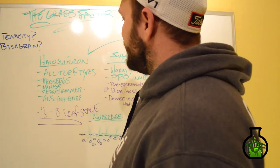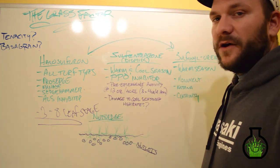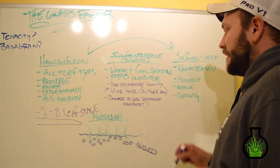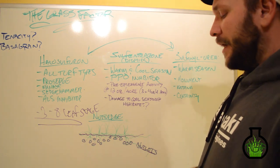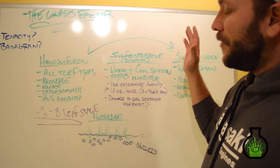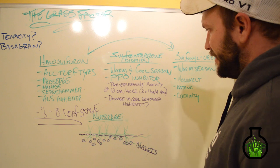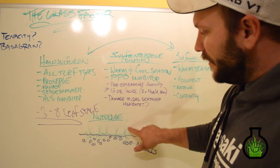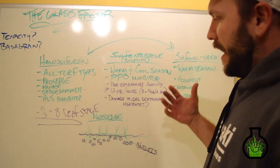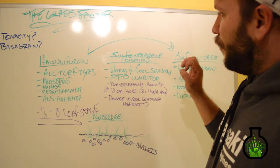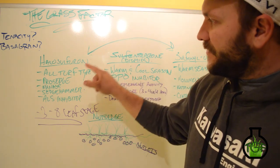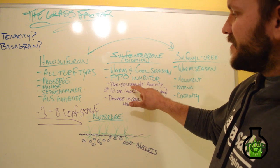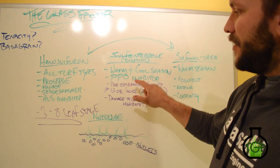Alright, that being said, let's move into sulfentrazone, also known as Dismiss. This is probably one of the more popular products out on the market. This is a PPO inhibitor. So this is going to interrupt the chlorophyll production cycle that takes place in the plant. Again, this is another systemic product. So it's going to move from the leaf down to the nutlet. However, this is going to be the one big advantage of sulfentrazone to halosulfuron. At 12 ounces to the acre, we start to see signs of pre-emergence activity.